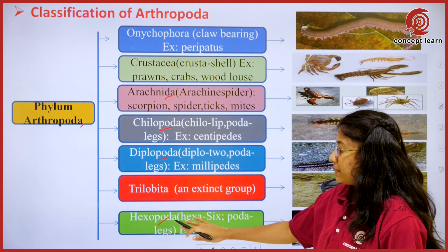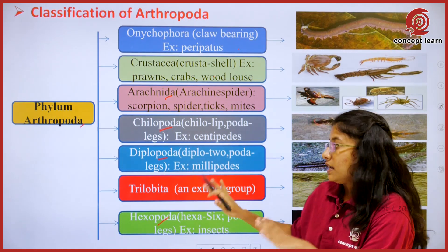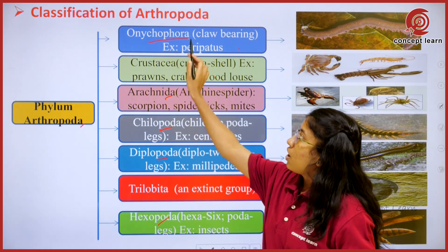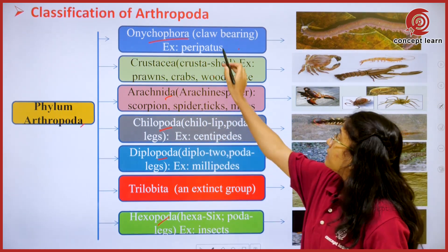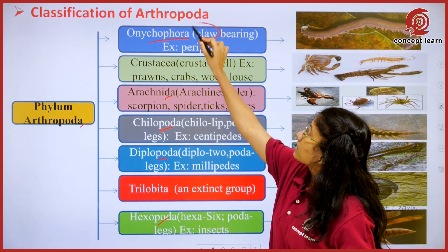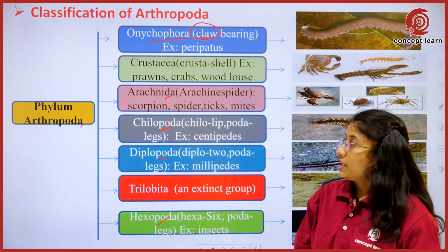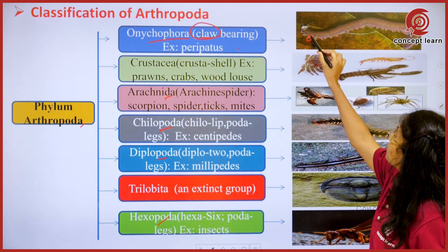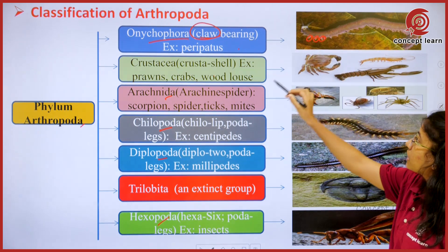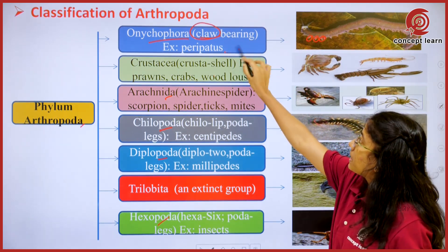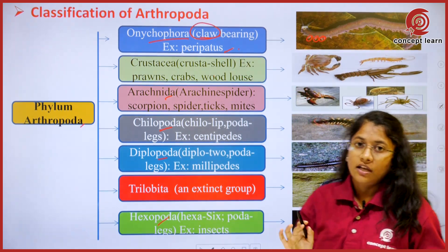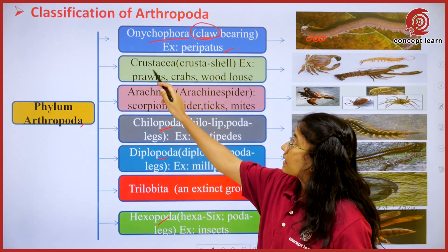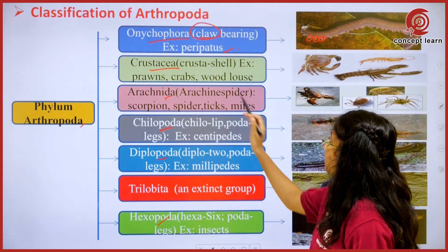Previously we discussed how many classes are present in it. The first class is Onycophora. These are known as claw-bearing living organisms. Just see in this image — these are the different claws which are used by the Peripatus for their locomotion purpose.